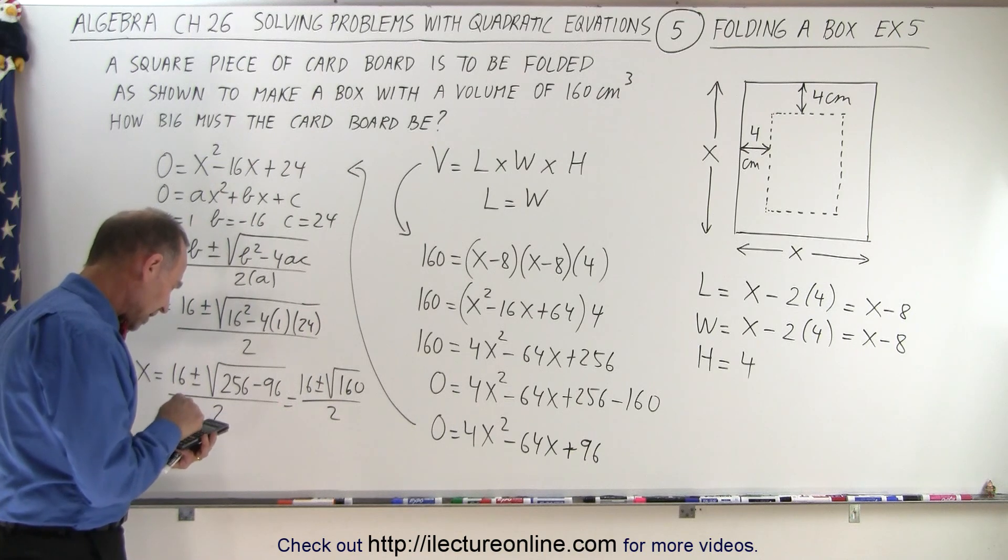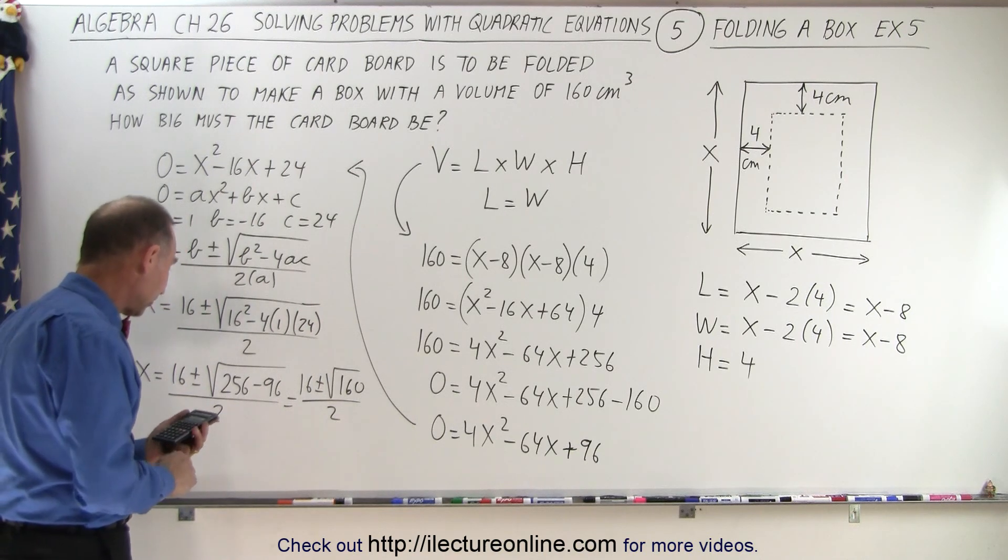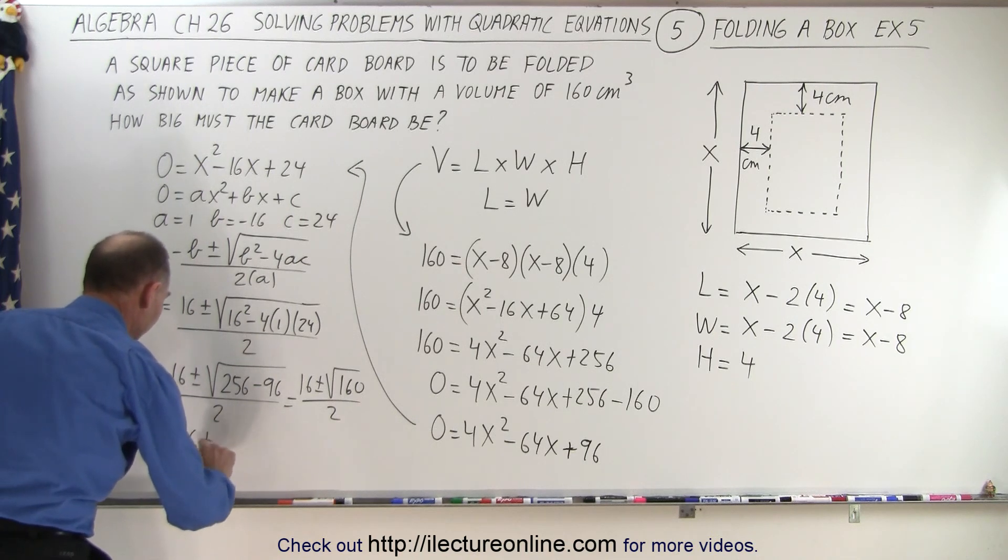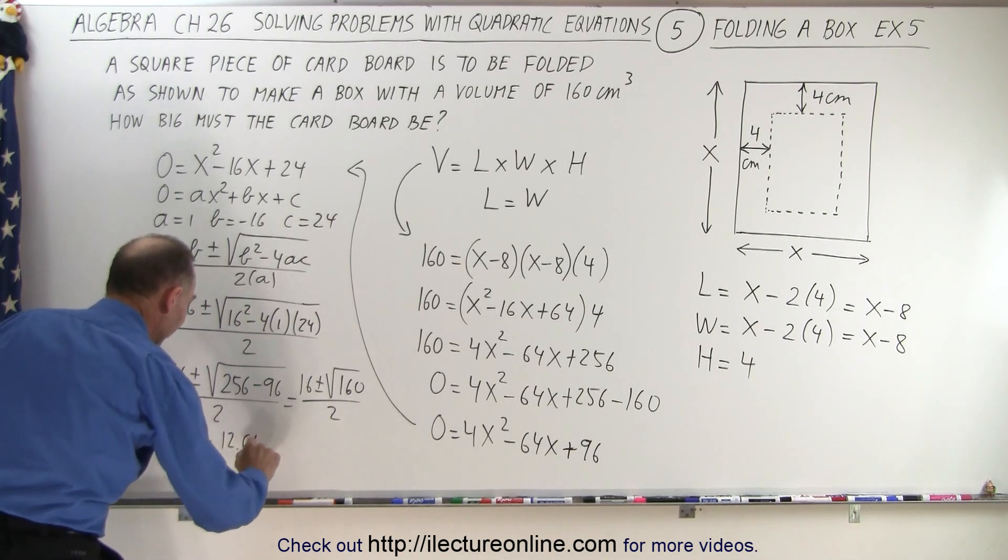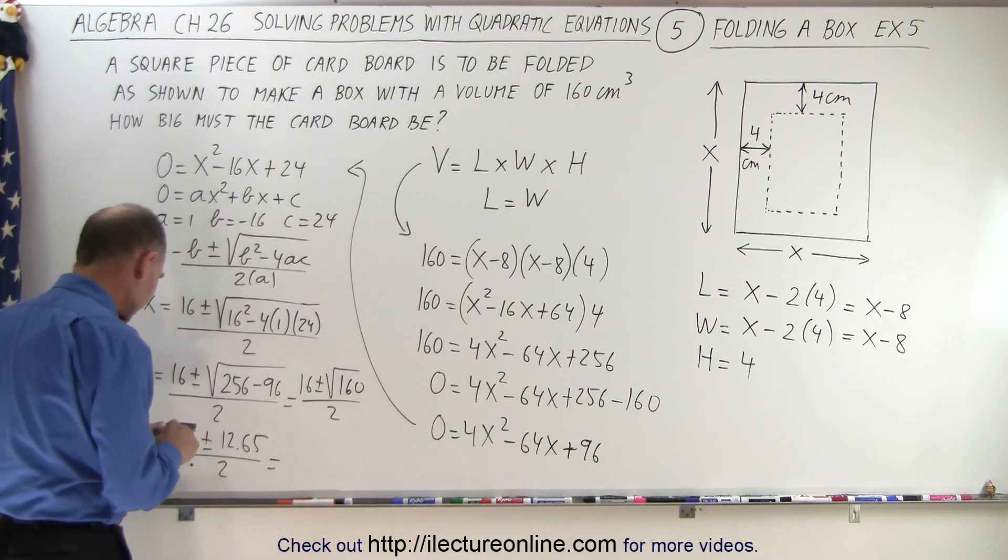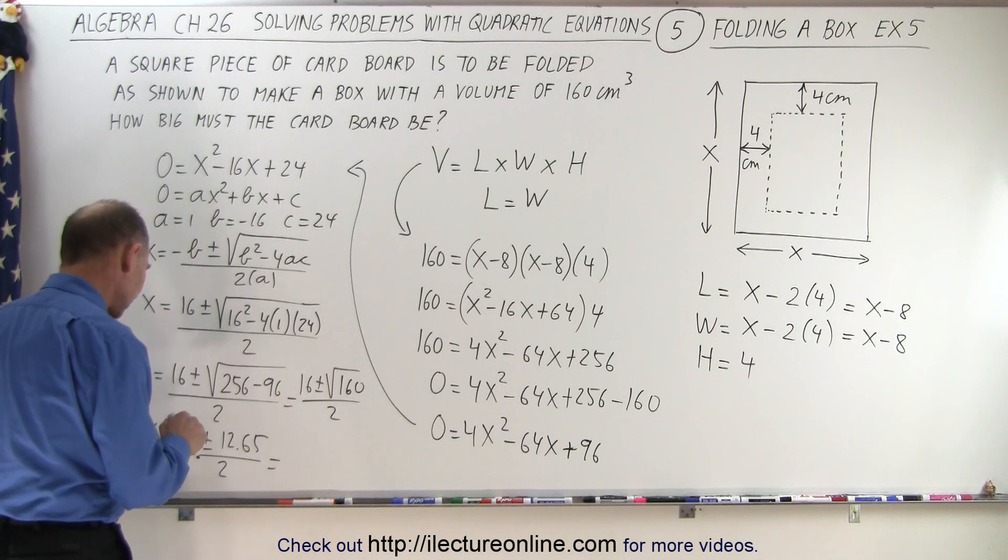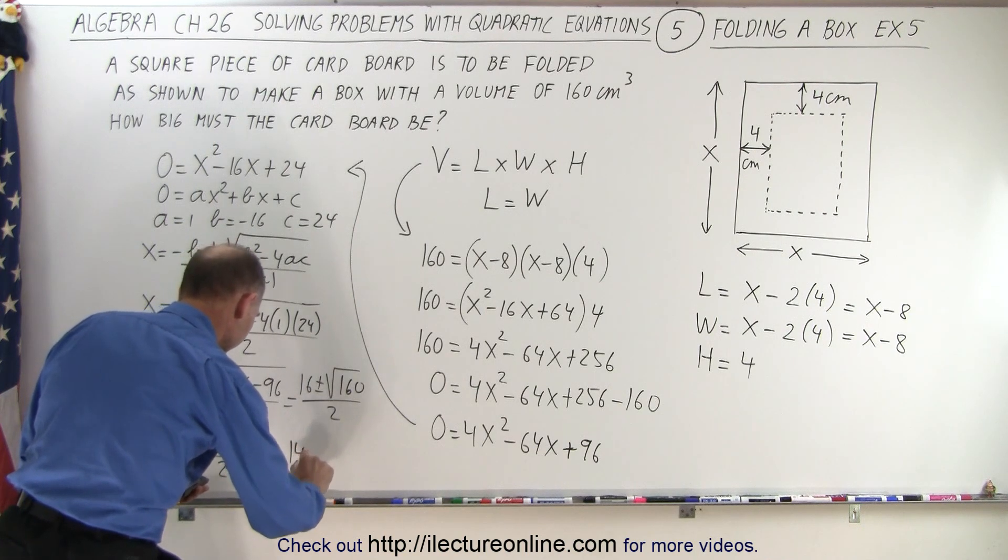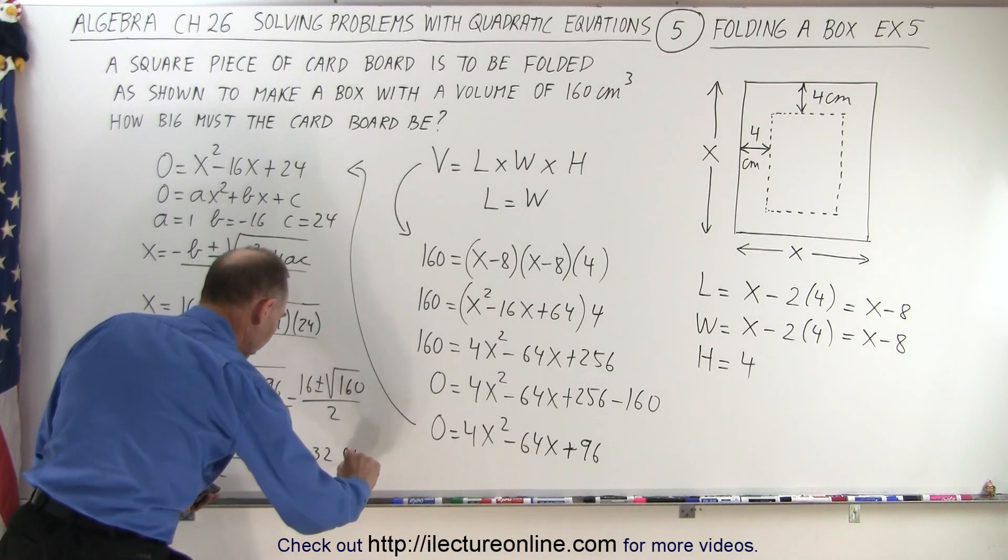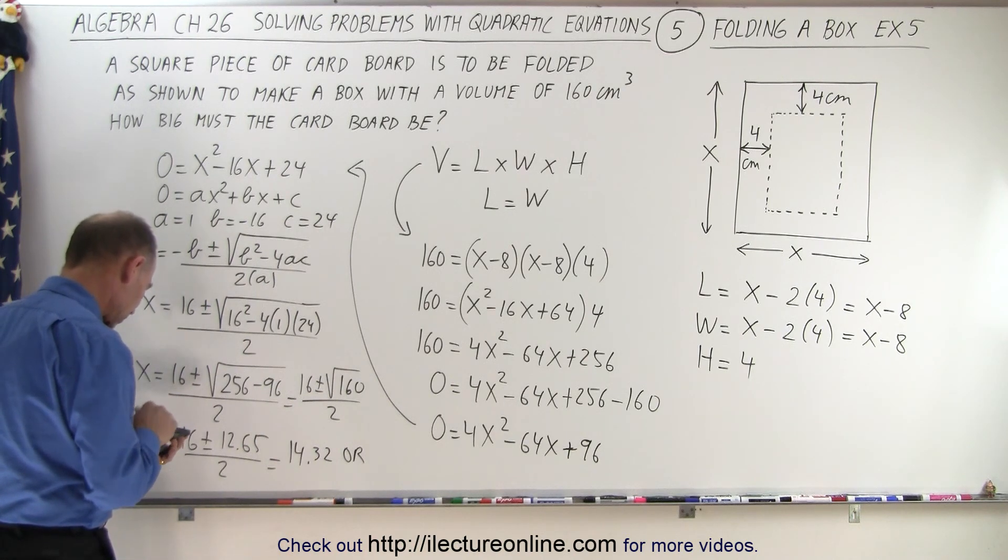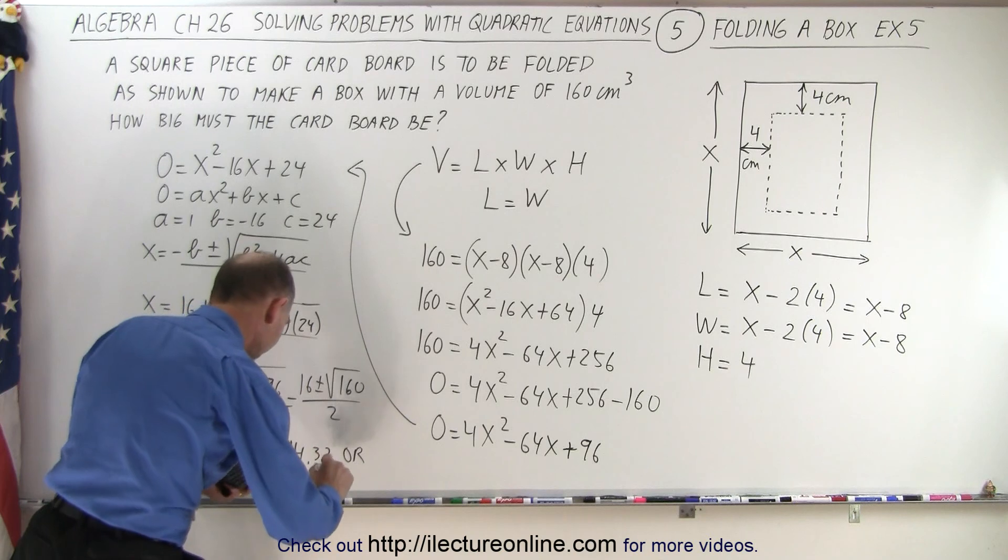160, take the square root of that, that gives us 12.65. So that means x equals 16 plus or minus 12.65 divided by 2, which is 14.32. Or if subtract 16 minus 12.65 divided by 2, which is equal to 1.68.